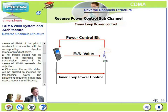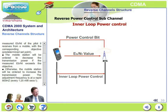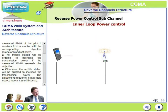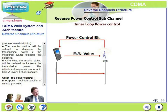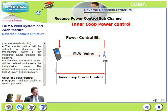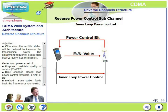The mobile station will be ordered to decrease its transmission power if the measured Eb/Nt exceeds the objective; otherwise it will be ordered to increase transmission power. The adjustment frequency is quite rapid at 800 times per second, that is, every 1.25 milliseconds.